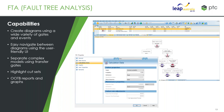From that, we can also highlight things like cut sets — identifying the events and gates leading up to the top-level event. We can calculate those and then easily highlight them within the module itself.